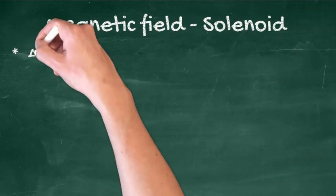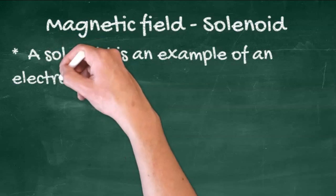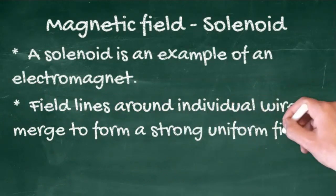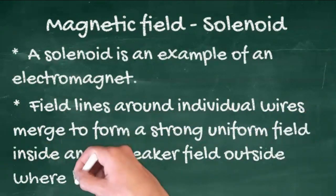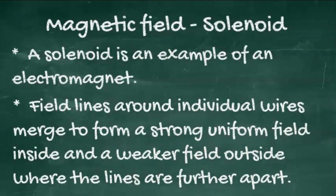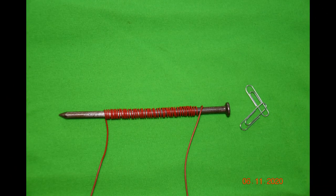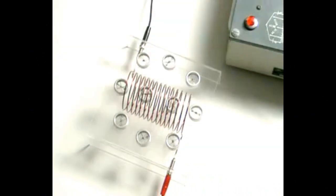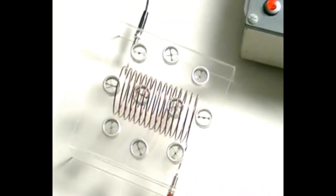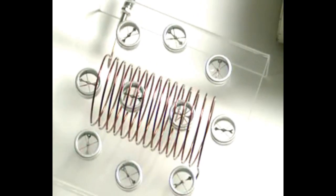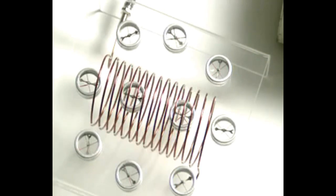Wires can also be wrapped into coils, and we call these coils of wires solenoids. A solenoid is an example of an electromagnet. Field lines around the individual wires merge to form a strong uniform field inside, and a weaker field outside. You've probably even built an electromagnet by wrapping a wire around a nail and passing a current through. As the electricity is switched on and off, so is the magnetic field.